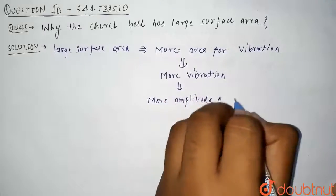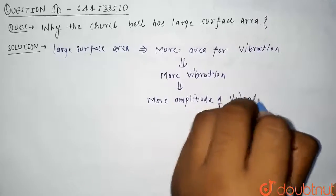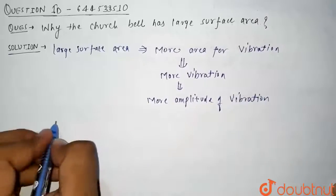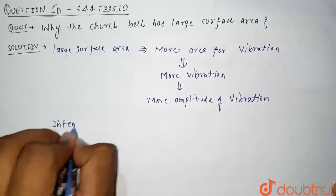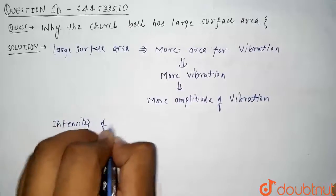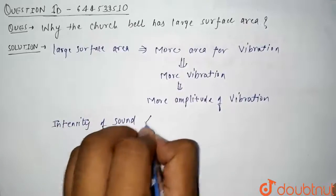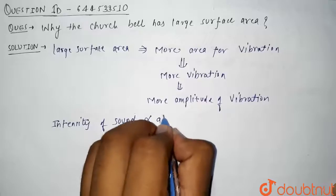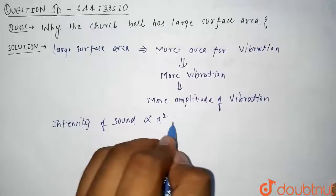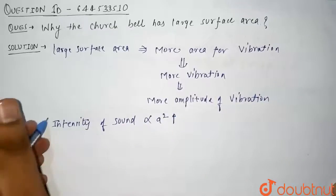And then we know that intensity of sound is directly proportional to amplitude squared. So if there is more amplitude of vibration, then there will be more intensity.